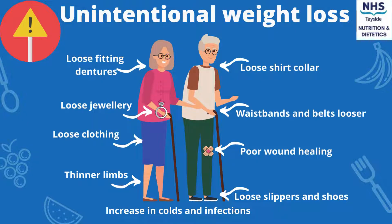There are many signs of unintentional weight loss to look out for. This includes loose-fitting dentures, loose rings, watches, or clothes, thinner limbs, an increase in colds and infections, loose shirt collar, waistbands or belts, poor wound healing, or loose slippers and shoes.